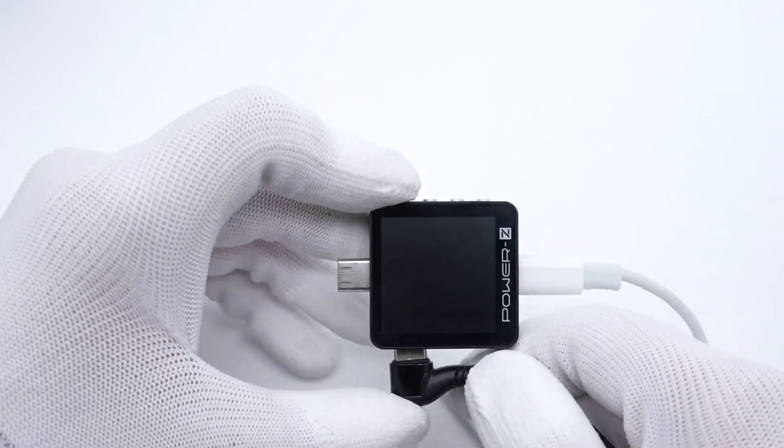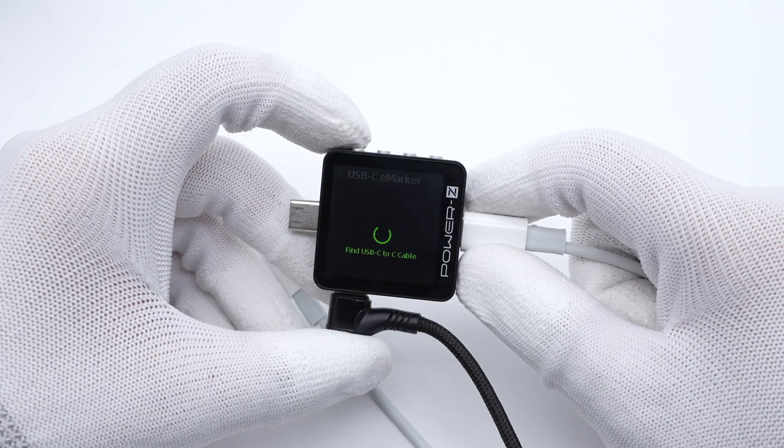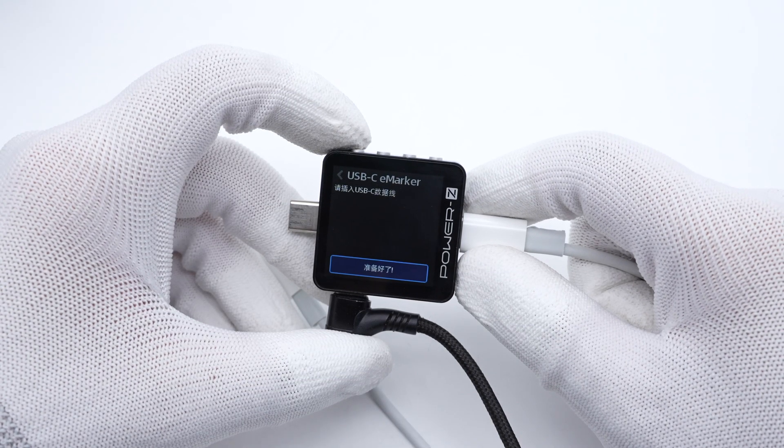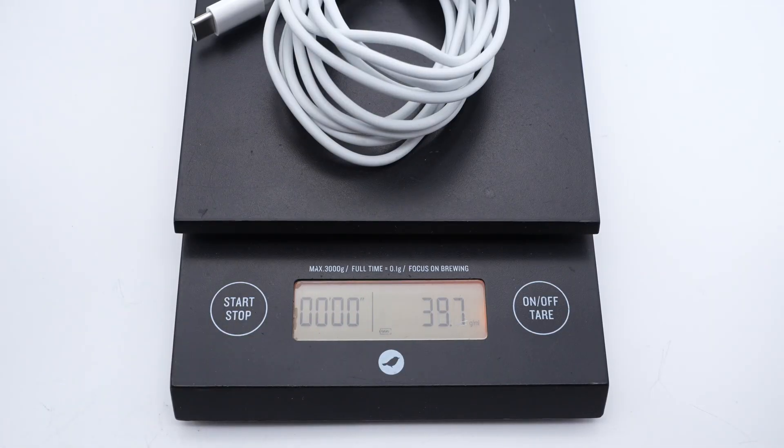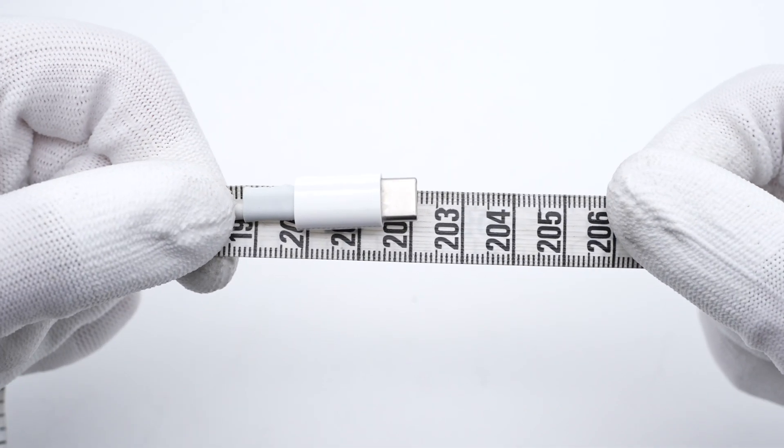The ChargerLab Power-Z KM003C shows it's not equipped with an E-marker chip. The weight of this cable is about 40 grams, and the length is about 2 meters.